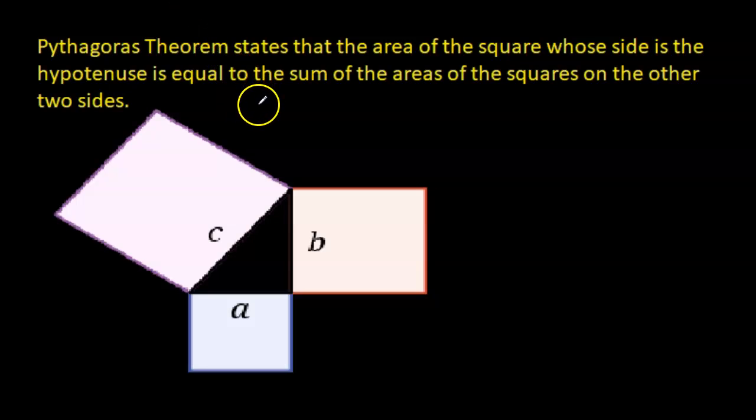Now something I did not mention in the introduction video on Pythagoras theorem, and I'll read directly from the screen for you. The theorem states that the area of the square whose side is the hypotenuse is equal to the sum of the areas of the squares on the other two sides.